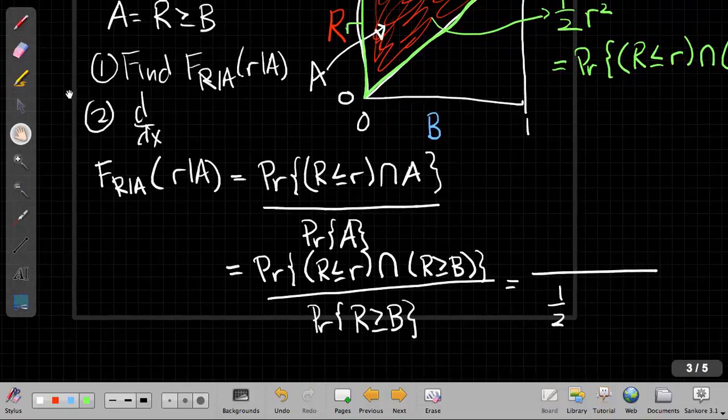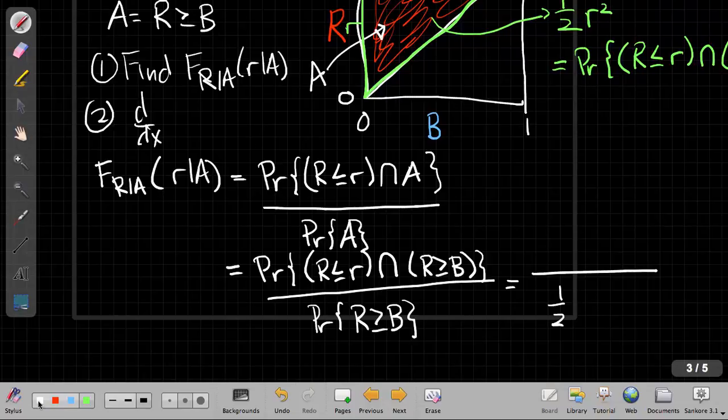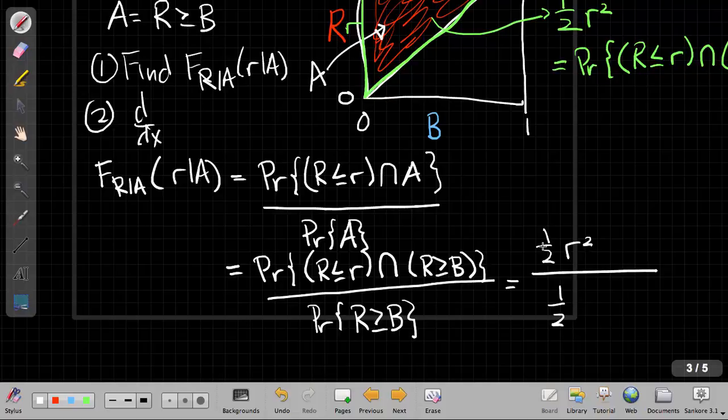And so if we fill that in here, I have one half r squared. So these two cancel out and I'm left with just r squared.